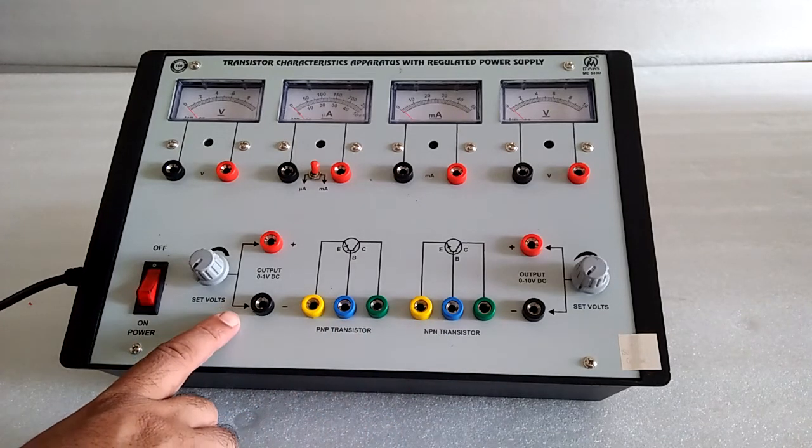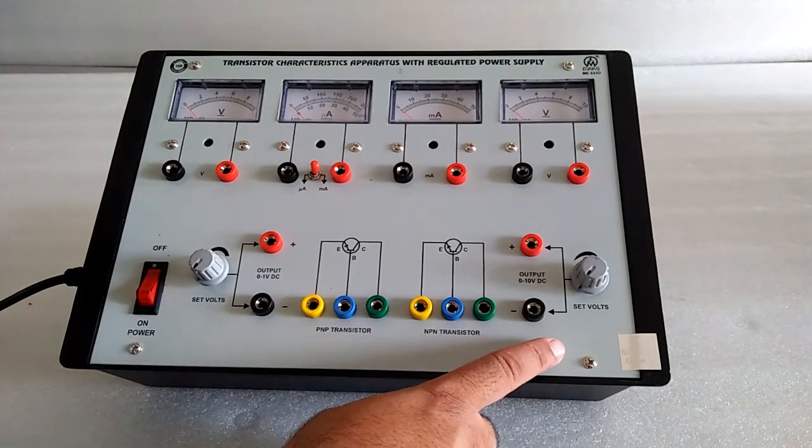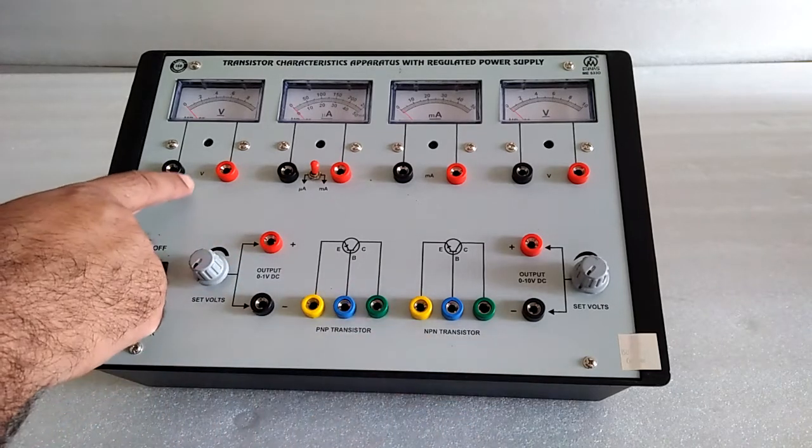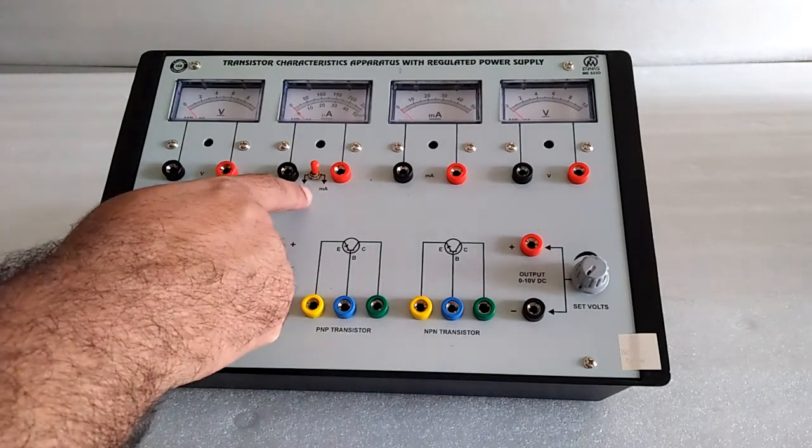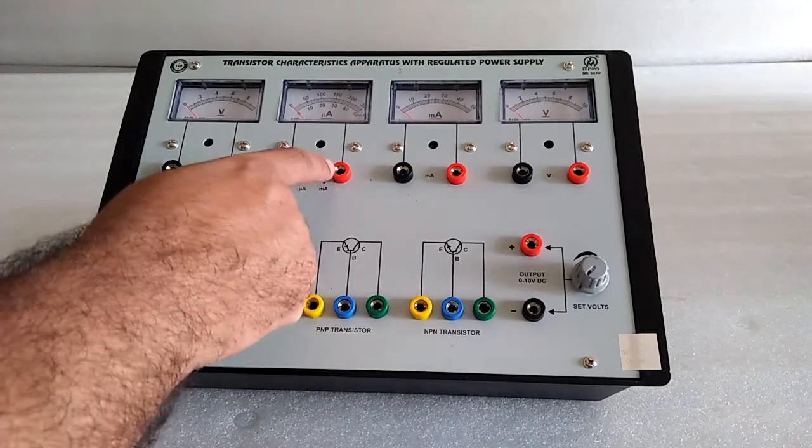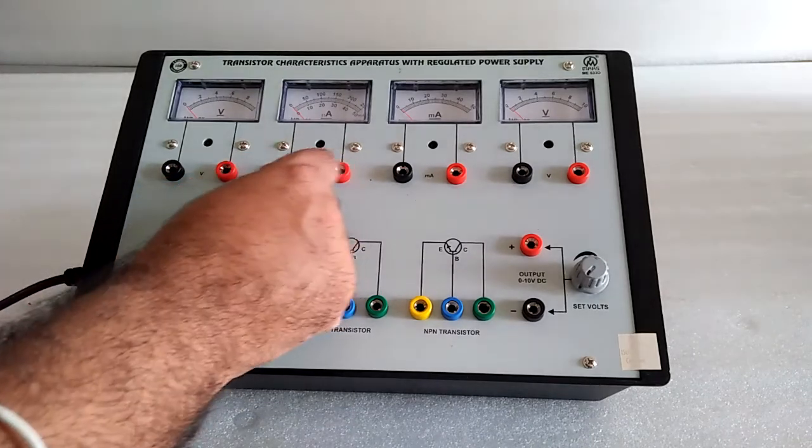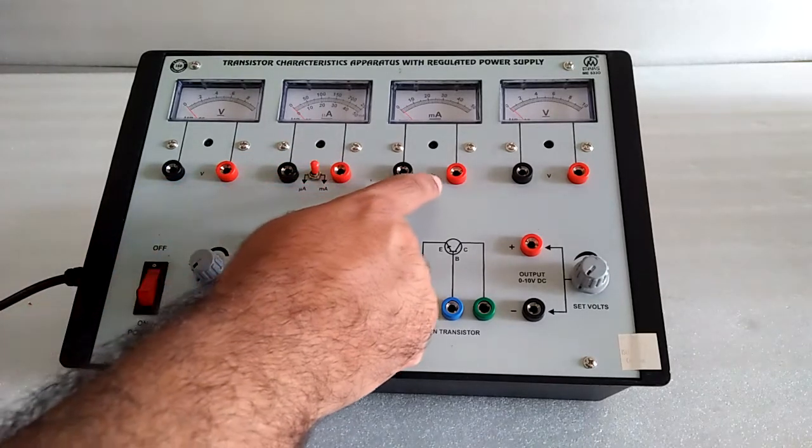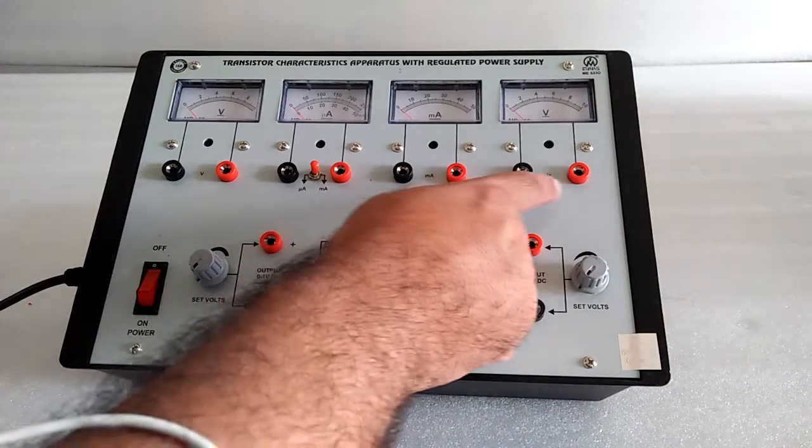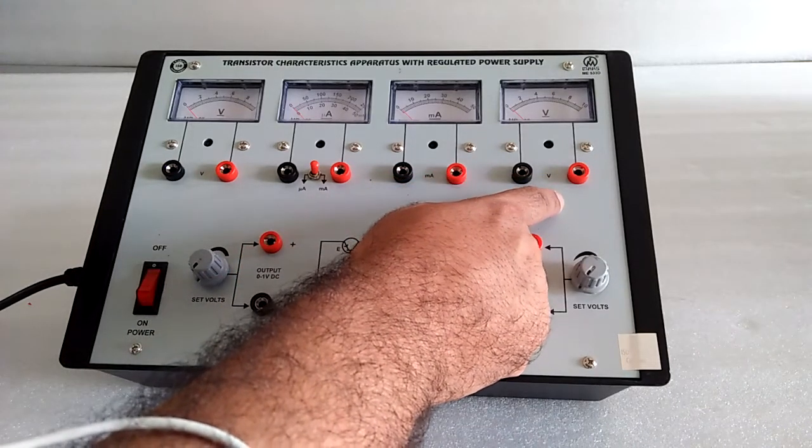Here is the voltage 0 to 1 volt DC and 0 to 10 volt DC variable, voltmeter 1 volt, current meter micro ampere and milli ampere. Using this switch, there is the current 50 milli ampere and 10 volt DC metal.